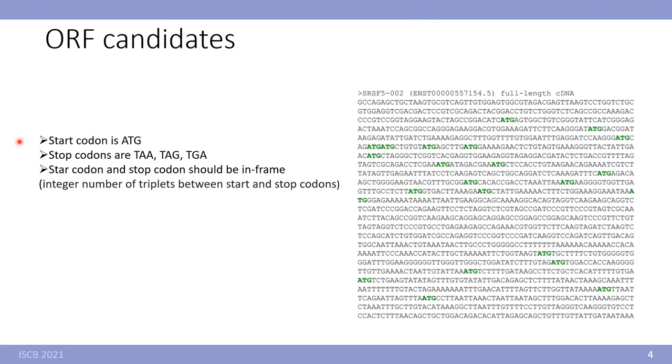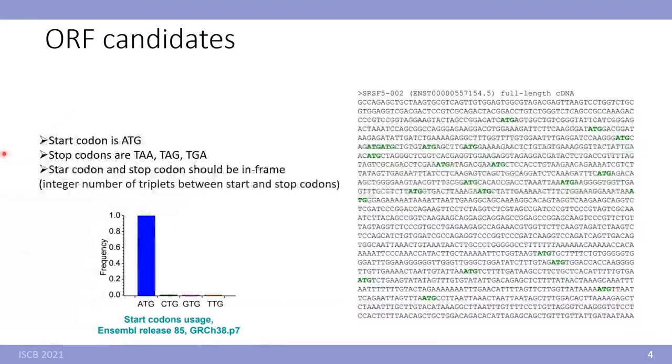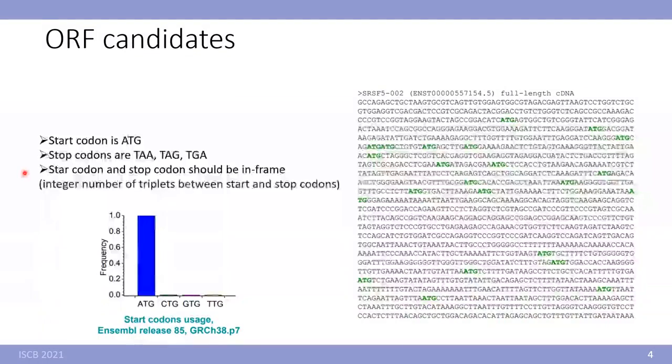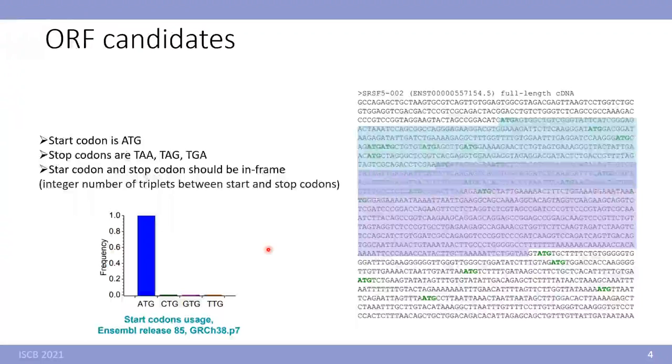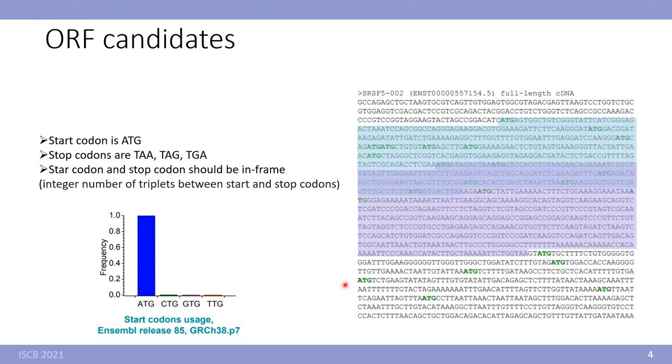First, start codon is ATG. It is not the only one but the most common. Then stop codons are TAA, TAG and TGA. And importantly, start codon and stop codon should be in frame. Looking at these characteristics we can find several subsequences that potentially could be open reading frames. They are candidates to be open reading frames.